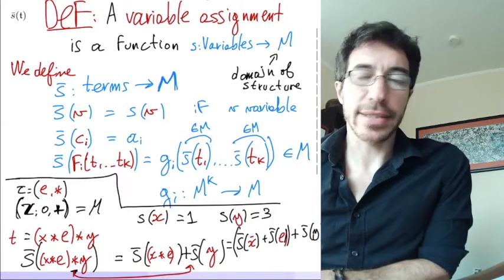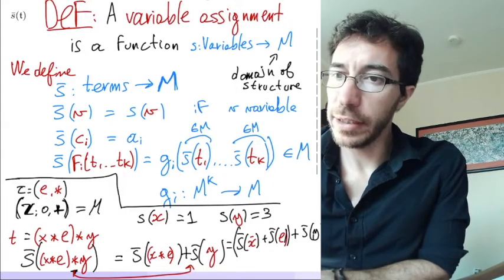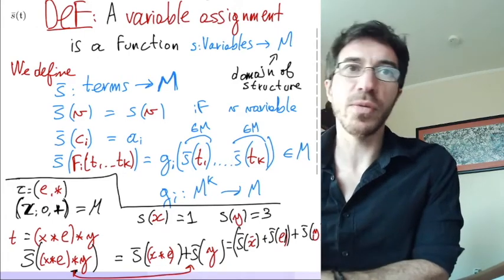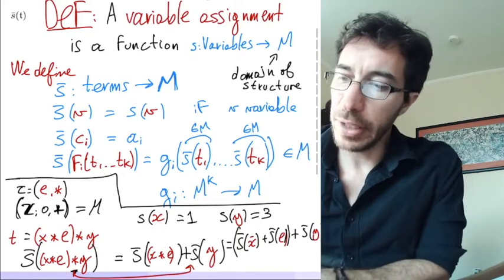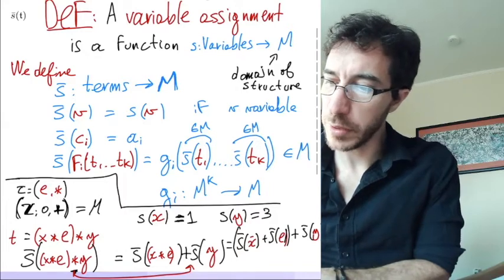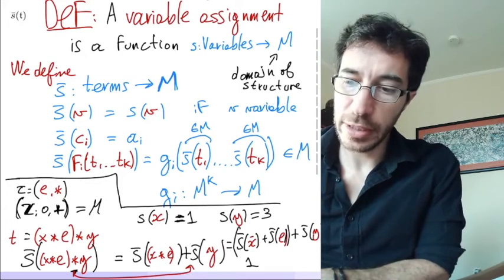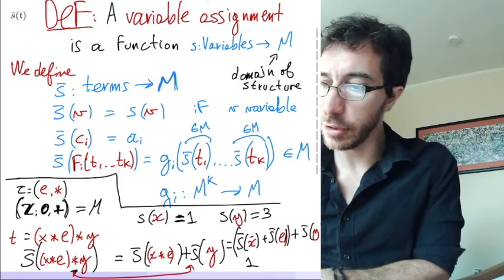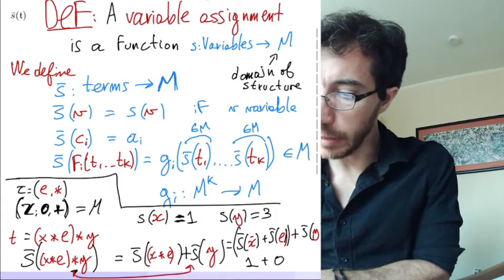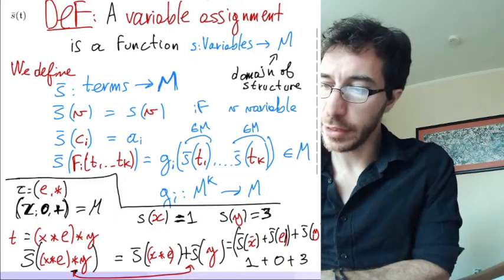And now, okay, the y there is supposed to be red. And now when we apply s bar to a variable, we look at the original valuation. So that's right here. That's what we should get there. What is e? Well, e is a constant, and the constant here is being the constant zero, so that is zero. Plus is plus, what we know is plus. And then the y is going to number three, so that's three. And we get four.